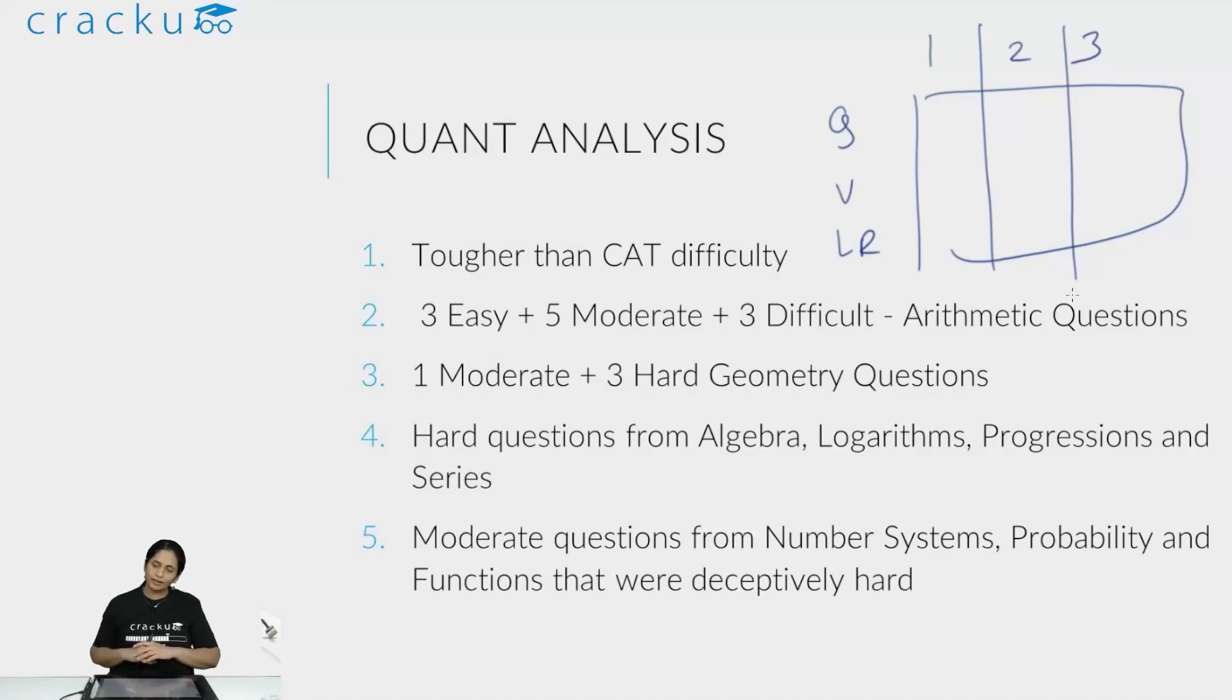Here the general trends remain the same. There was a heavy emphasis on arithmetic, on geometry, and from the other topics the questions were slightly evenly coming. Remember, even in a difficult Quant section, most of your scoring marks will come from the arithmetic section. Over here there were three easy questions that you should not have missed. There were five moderate questions from arithmetic—again, doable. There were three difficult questions. Even if you had not done those, there were eight easy to moderate questions from arithmetic for the taking.